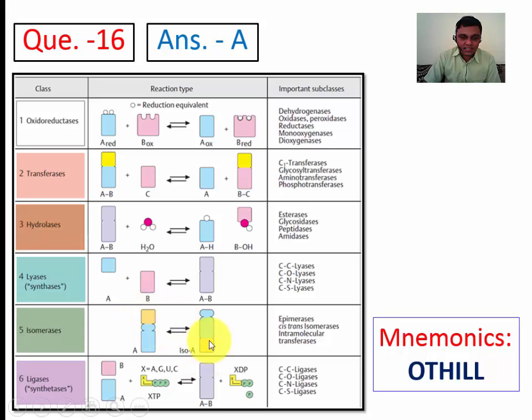If OH is here, then it will transfer to here. If carboxyl group is here, it will be transferred to here. So that is isomerase. That is a movement of molecular group within the molecule only. So transferase will transfer the molecular group from one substance to another, whereas isomerase will transfer the group within itself only.